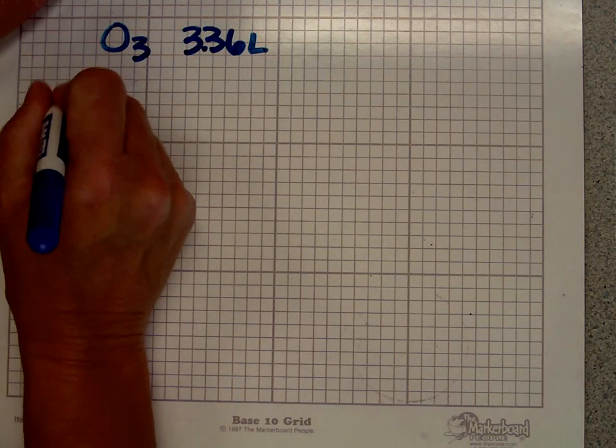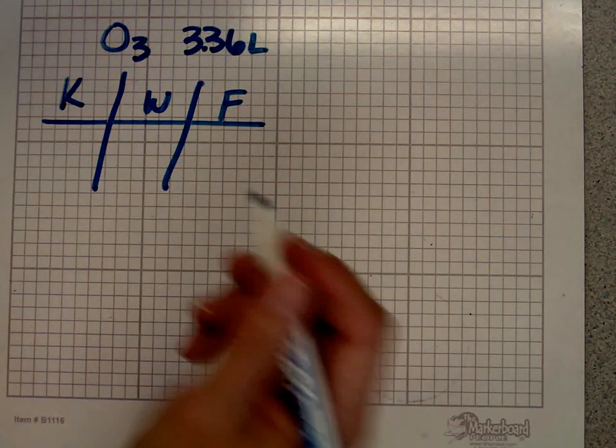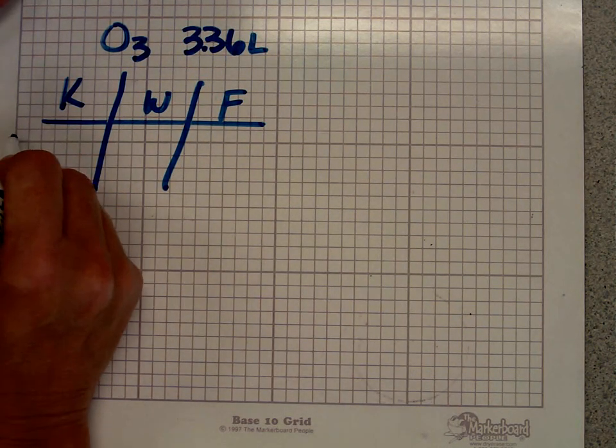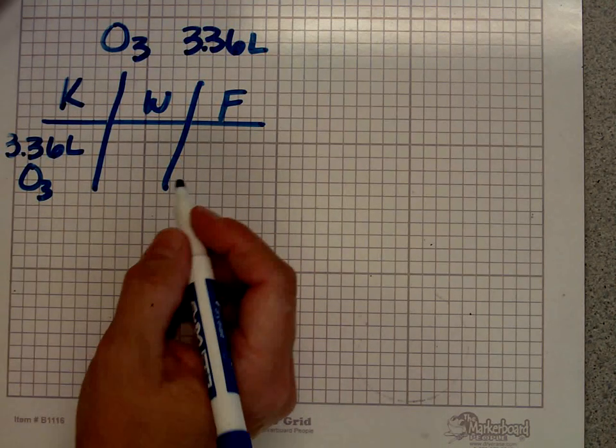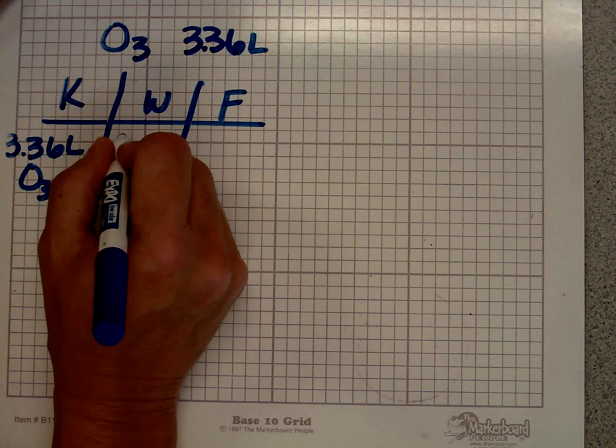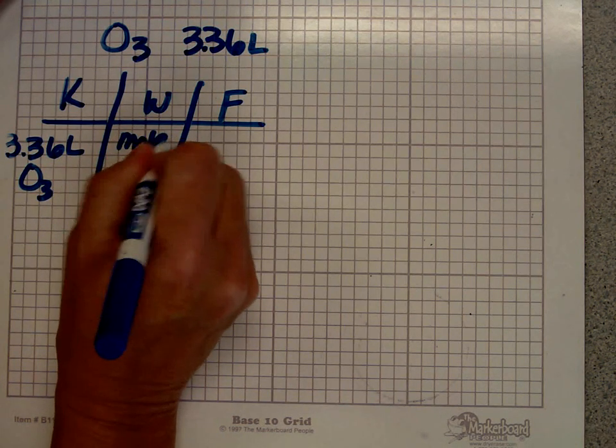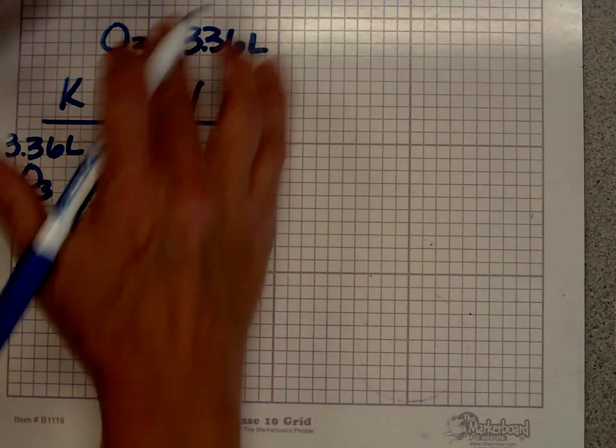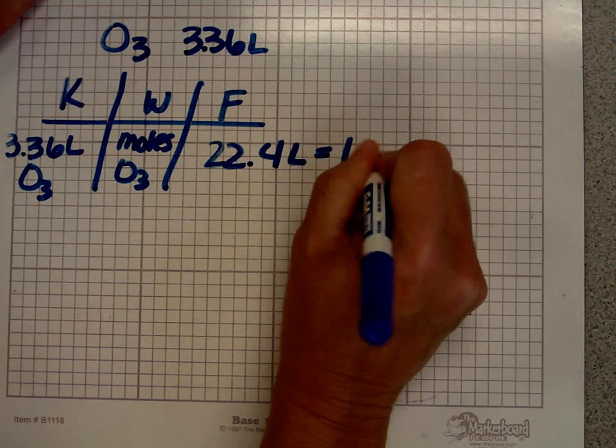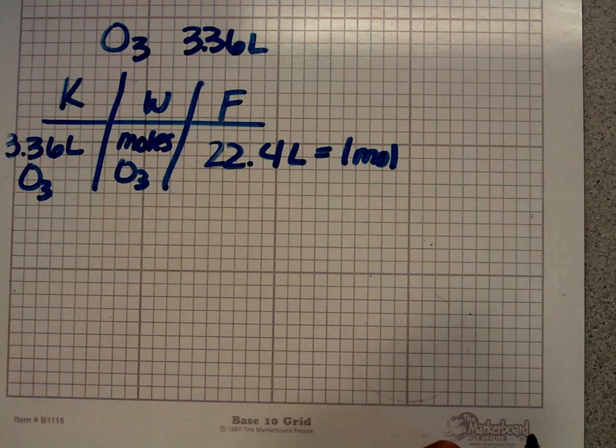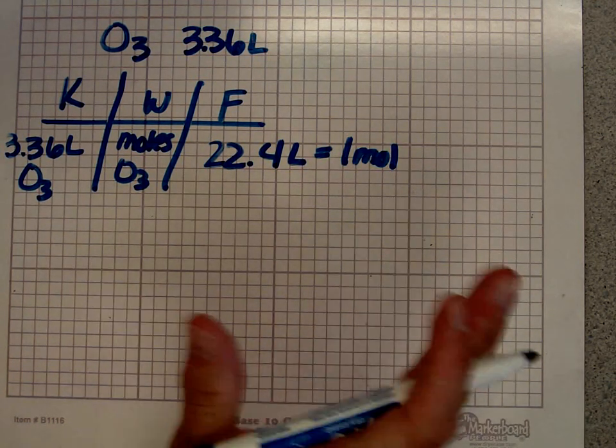In a previous video, I showed you how to do a Know, Want, and Formula grid. I use that all the time. What do I know? I have 3.36 liters of ozone. What do I want? I want to know the number of moles of O3. For the formula, anytime I see liters or volumes, this number jumps in my head: 22.4 liters is one mole. The amazing thing is that's for any single gas at standard temperature and pressure.